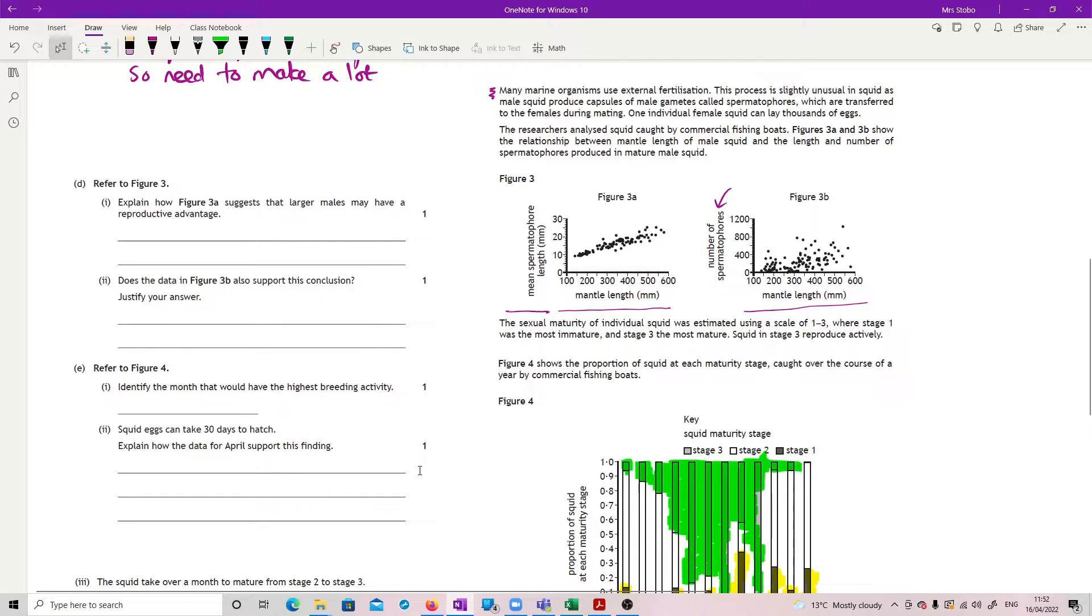Explain how figure 3a suggests that larger males may have a reproductive advantage. That one's pretty straightforward. So our larger males was our mantle length going along this way. And this is the mean length of the spermatophore. We've got capsules of male gametes called spermatophores. So if you've got a longer spermatophore, you must have more male gametes in there. So that's a kind of nice, look at that, that's a pretty clear positive correlation on that one.